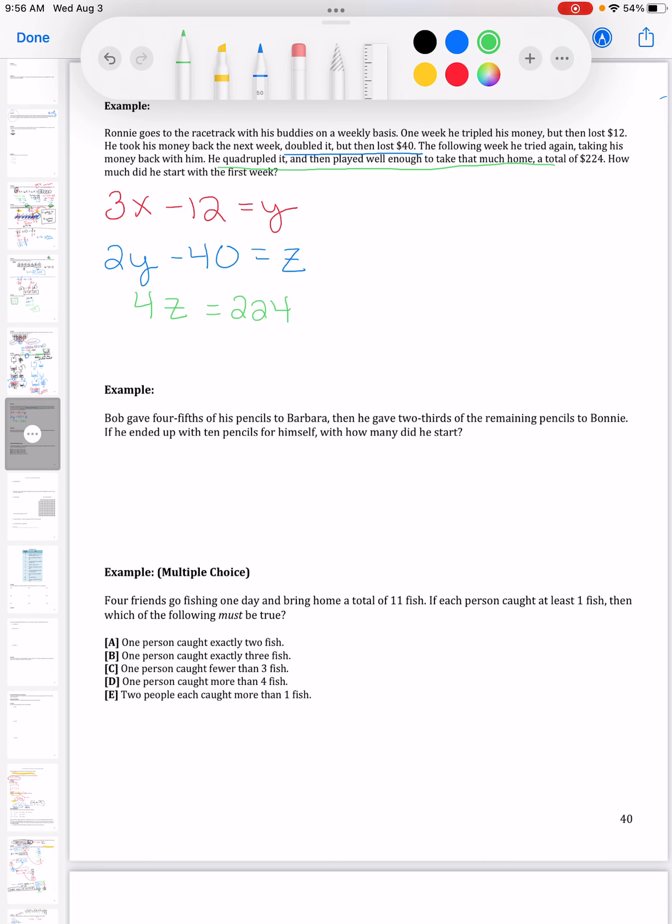So 4Z, quadrupled means times four, and he left with $224. So I can solve this, I'm going to have to work backwards. But if I set this up now I can solve. I can only solve equations that have one variable in them.